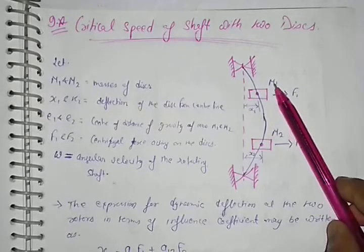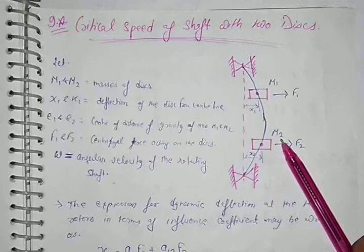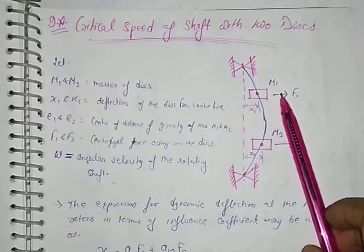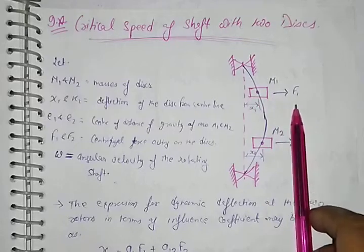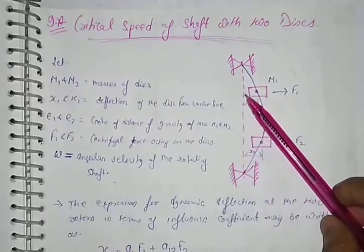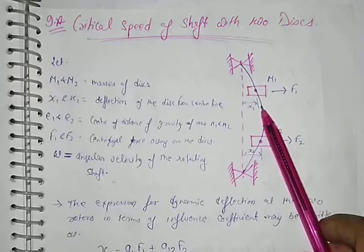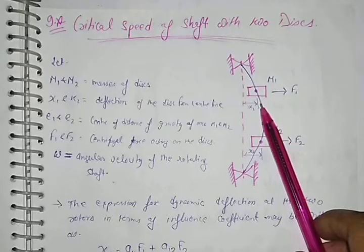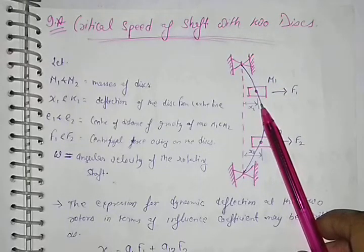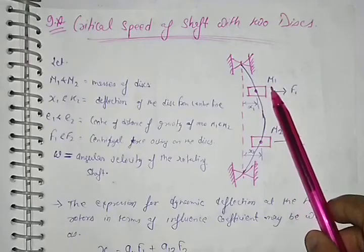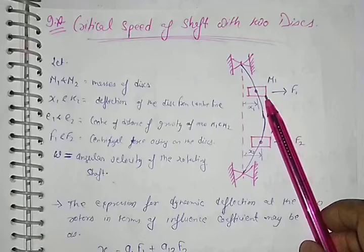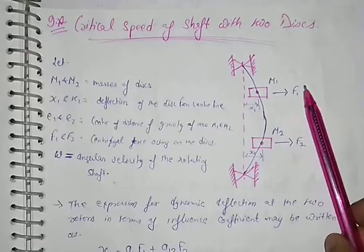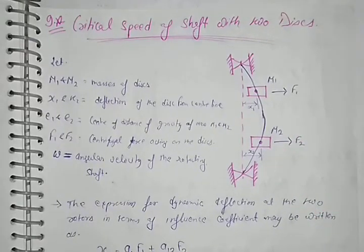One disc has mass M1 and another disc has mass M2. When they are rotated due to high centrifugal force, it deflects from the centerline of the shaft because of the welding nature of the shaft during this. When M1 displaces with X1 and M2 displaces with distance X2, we have force F1 or force F2, where F1 and F2 is centrifugal force. Clear?